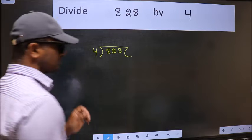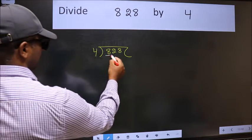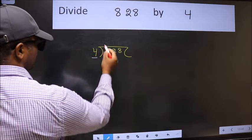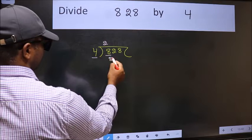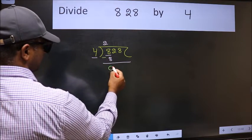This is your step 1. Next, here we have 8 and here 4. When do we get 8 in the 4 table? 4 times 2 is 8. Now, we should subtract. We get 0.